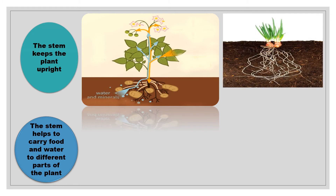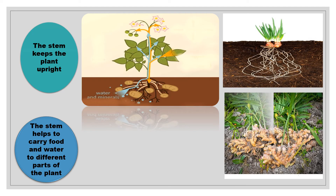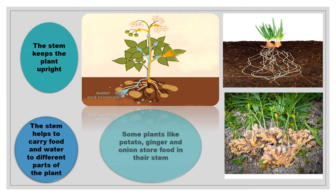Onion plant. Ginger plant. Some plants like potato, ginger and onion store food in their stem.